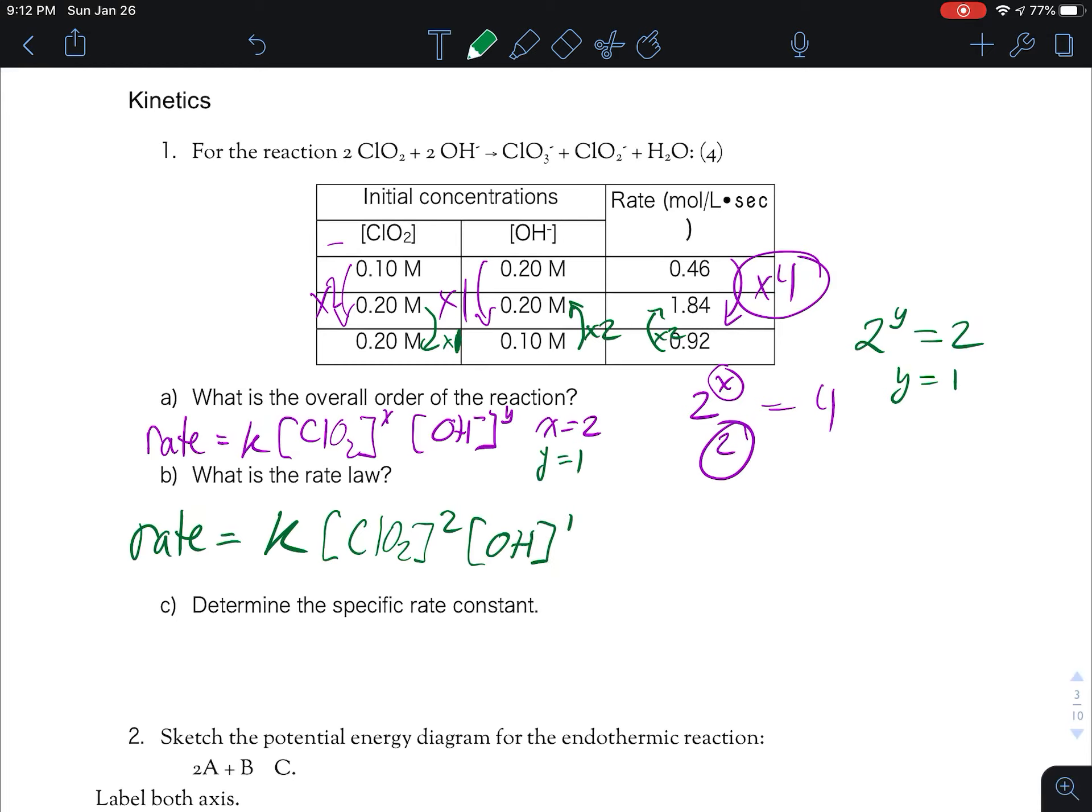So what is the rate law? The rate law here is rate equals k times ClO2 to the power of two times OH- to the power of one. And then we didn't actually answer this question. The overall order of the rate is three.